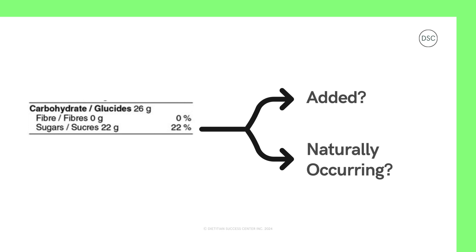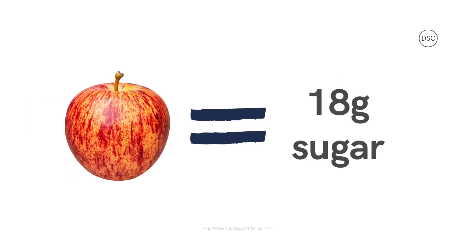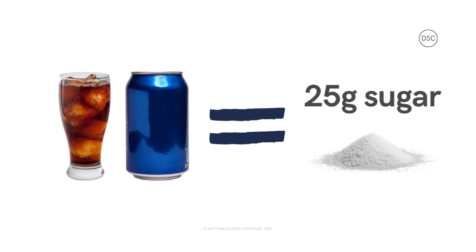Sugars can be a little bit confusing. One important thing to note about the nutrition facts table is that it does not always differentiate between added sugars — sugars that are added during the food or drink manufacturing process — and those that are naturally present in a food. For example, one medium gala apple has about 18 grams of total sugar, but no sugar has been added; this sugar is naturally occurring. Versus one can of regular pop, which has about 25 grams of sugar — all of which has been added to the product. These are the types of sugars we want to try and limit.